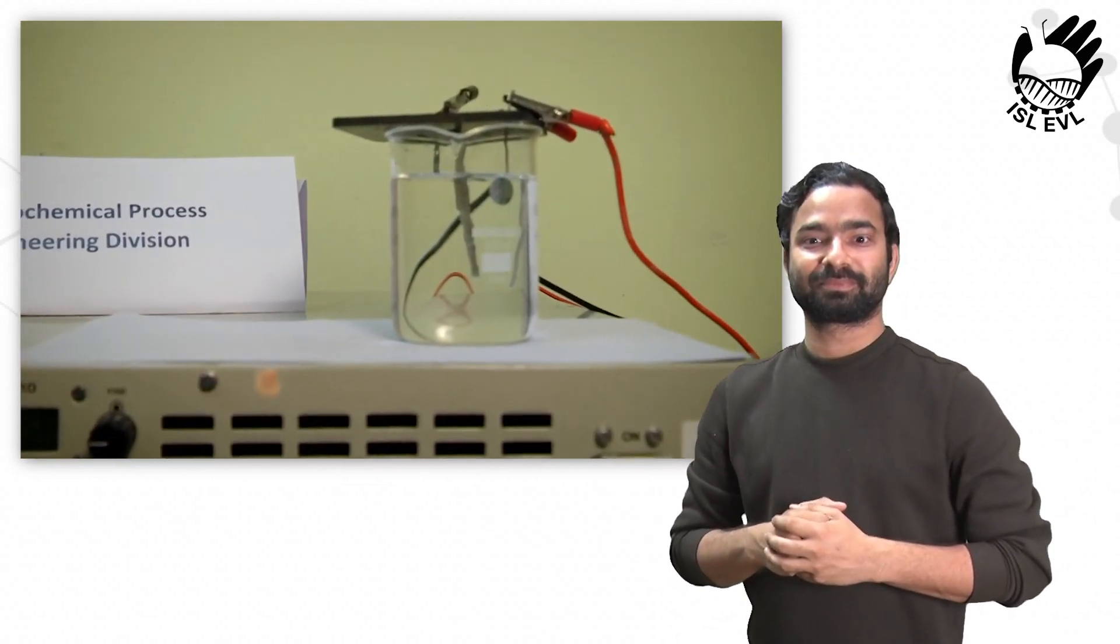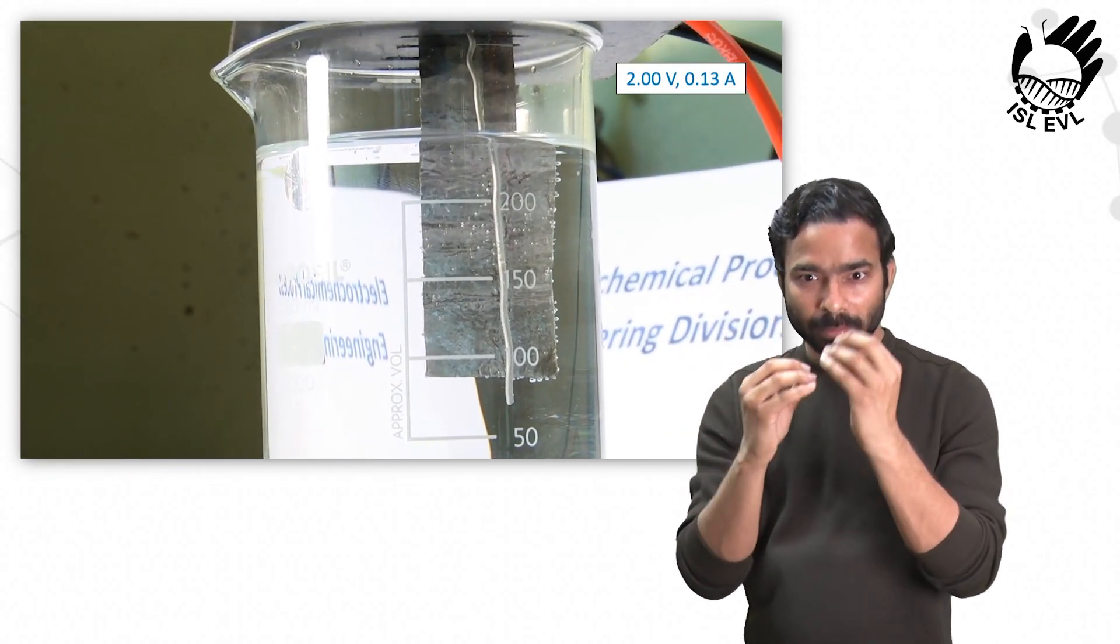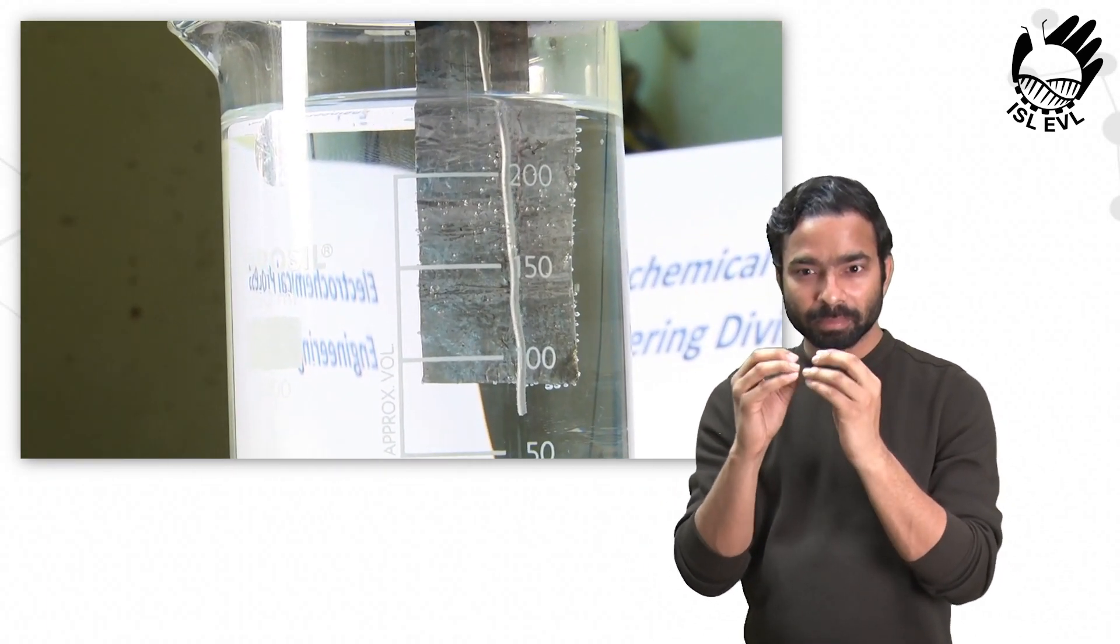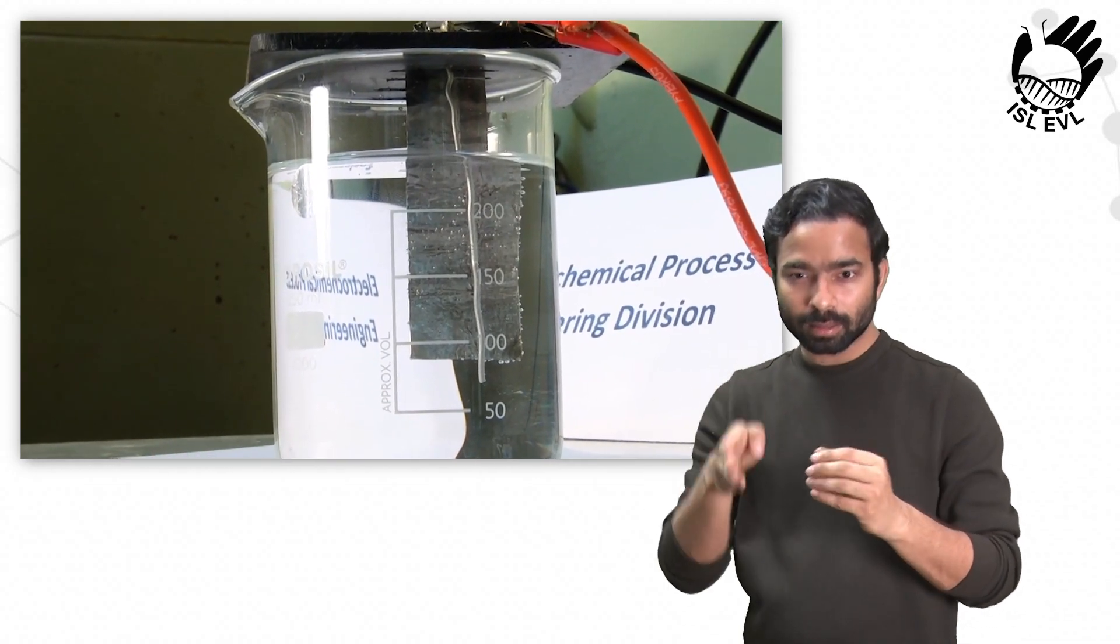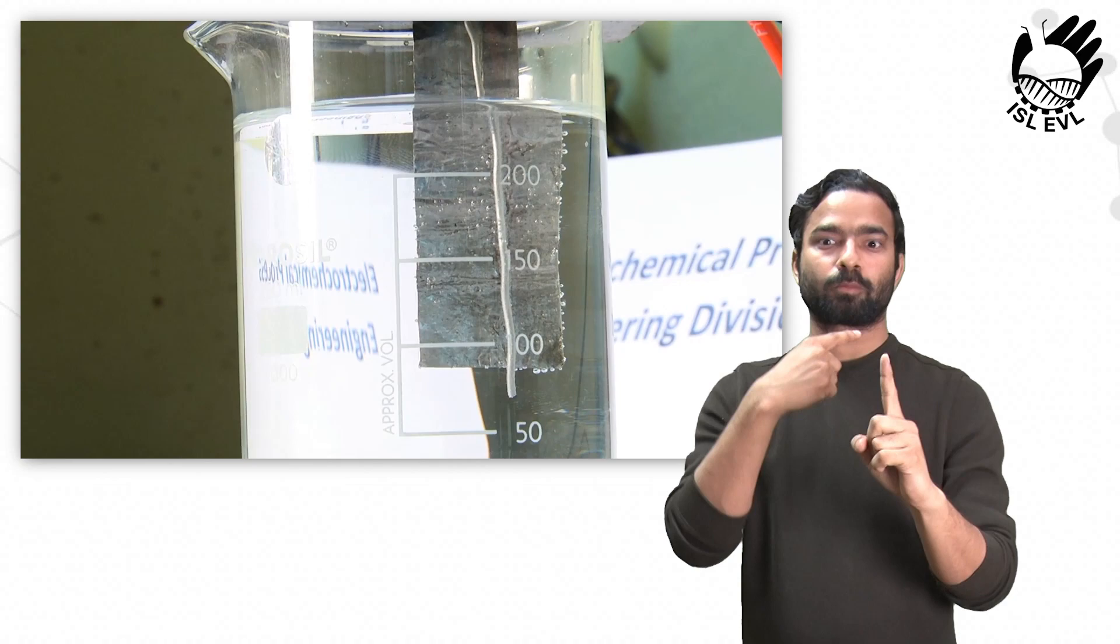Now, let's set the cell voltage to 2 volt. The current is recorded as 0.13 ampere. Here, we can view the hydrogen evolution at the platinum foil on the cathode side and oxygen evolution at the platinum wire on the anode side.